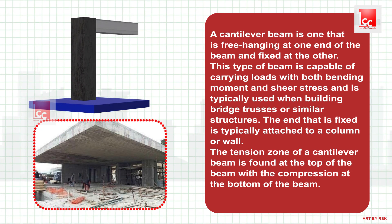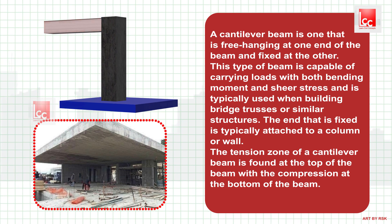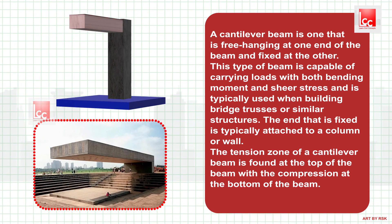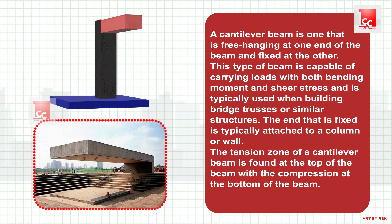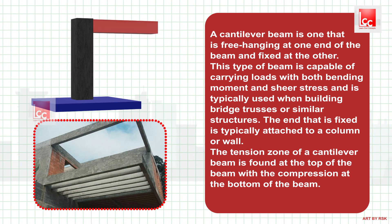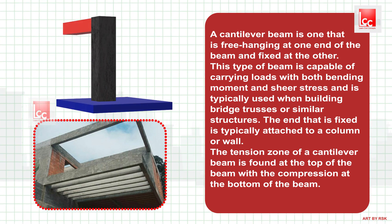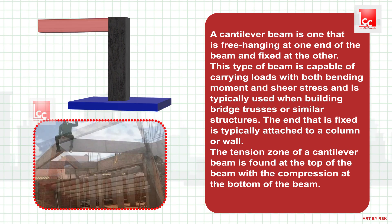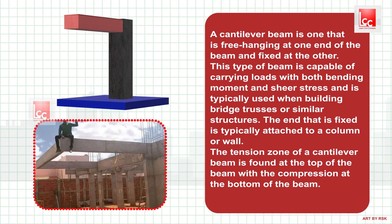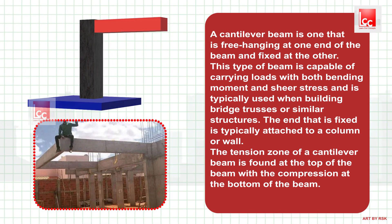Cantilever beam. A cantilever beam is one that is free-hanging at one end and fixed at the other. This type of beam is capable of carrying loads with both bending moment and shear stress, and is commonly used when building bridge trusses or similar structures. The fixed end is typically attached to a column or wall. The tension zone of a cantilever beam is found at the top of the beam, with compression at the bottom.